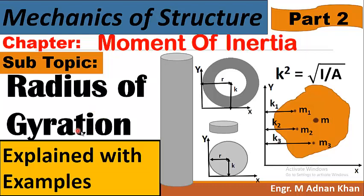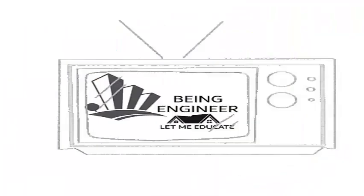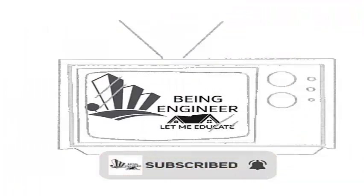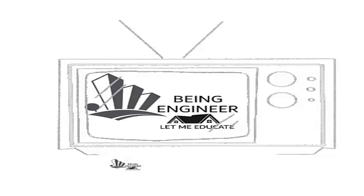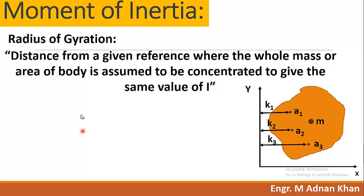Radius of gyration is defined as the distance from a given reference where the whole mass or area of a body is assumed to be concentrated, to give the same value of I. It is the distance from the area of each particle or the area of the whole body to give the same value of moment of inertia.